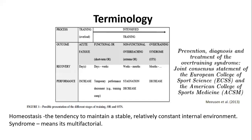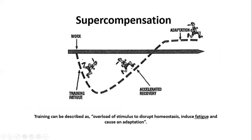If that continues for a longer period of time, we start flirting with what we call OTS — overtraining syndrome — which can go on over a matter of months. From a performance standpoint we start to see a decrease in performance and even illness. Where we want to get to is functional overload and those short-term positive outcomes. It's important to note that the word 'syndrome' is used because overtraining is truly multifactorial — there's not just one factor that results in it.